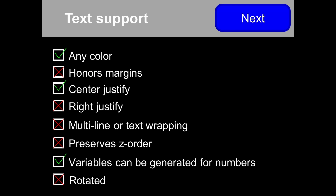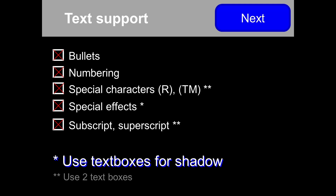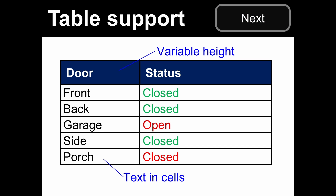Text support generally: any color, center justification, and variables can be generated from numbers — one of my personal favorites. However, margins are not honored, nor is text wrapping, line wrapping, or rotated text. There's also no support for bullets, numbering, or special characters. If you do want a special character, just draw a very small font in a second text box.